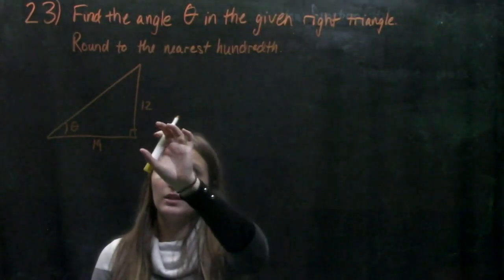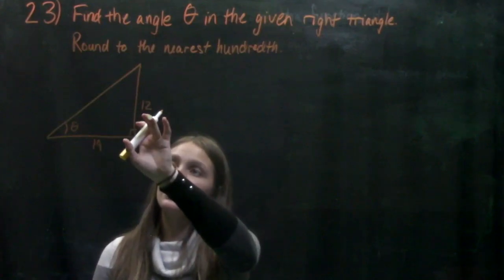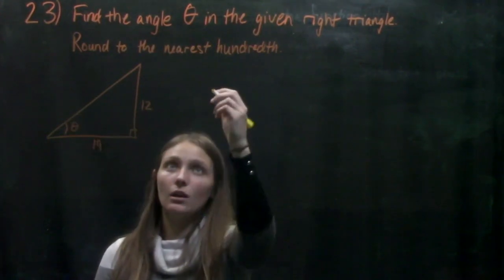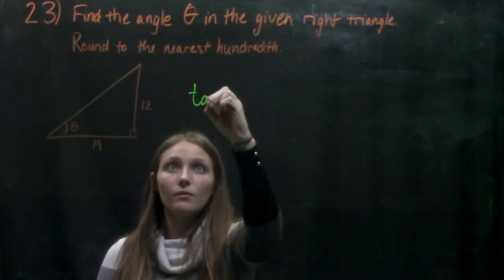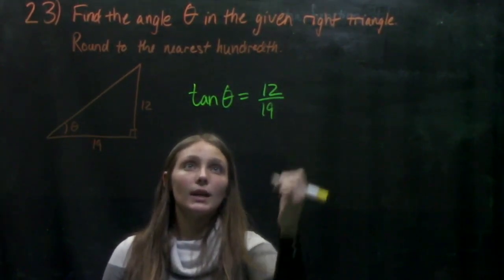We want to figure out a way to relate those two sides together. So we know from SOHCAHTOA that if we take the opposite over the adjacent, that's going to be the tangent of theta. So we have the tangent of theta equals 12 over 19.